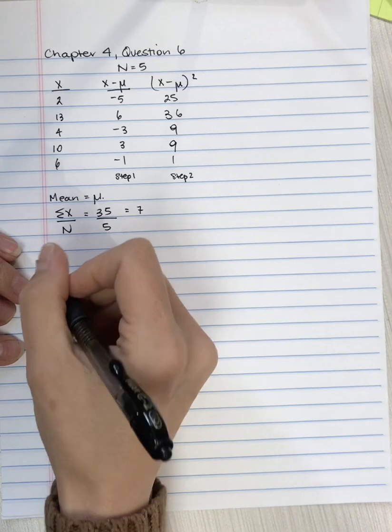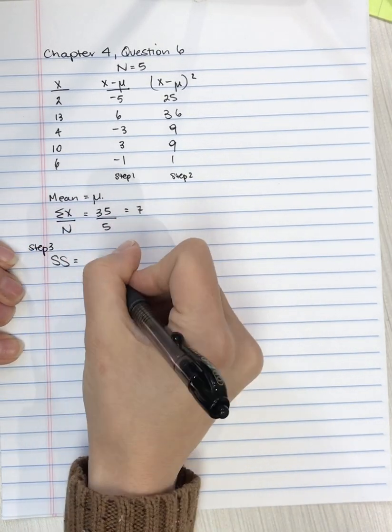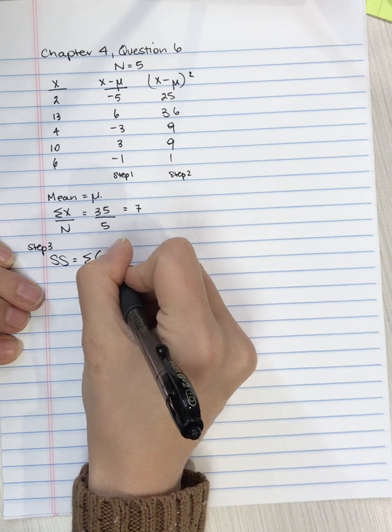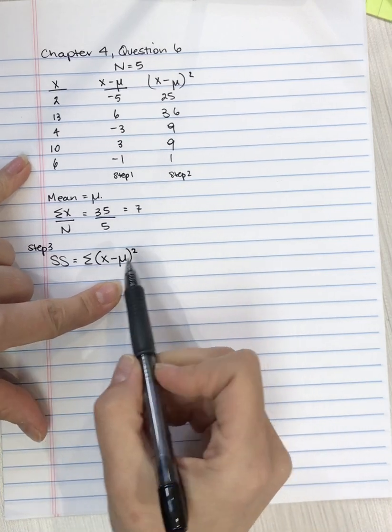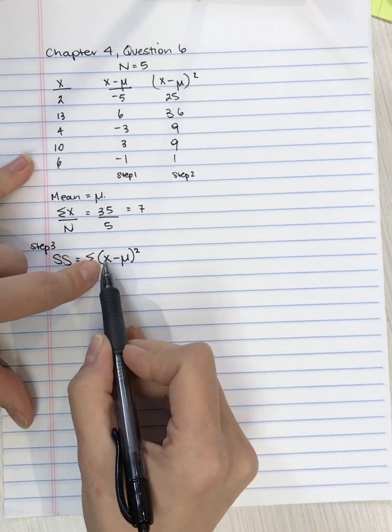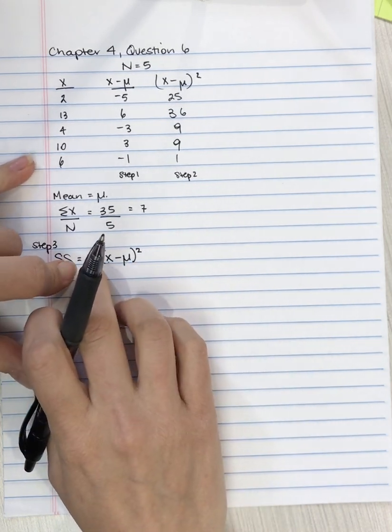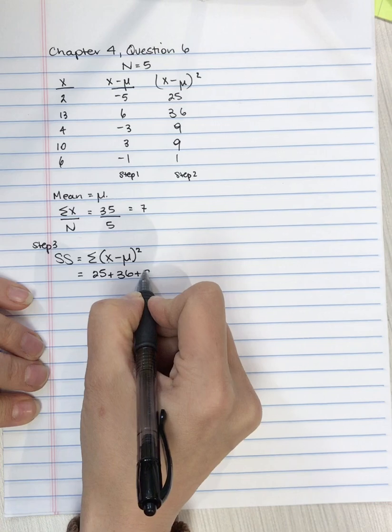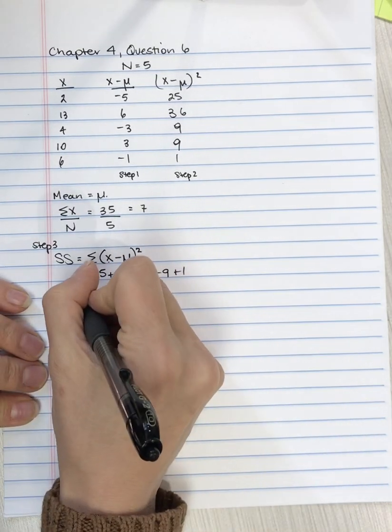Then for the sum of squares, which is step 3, we're going to add up the square of all of these deviation scores. So if we look here, just to review the order of operations, you take each score, you do the brackets, so you take each score, subtract the mean, then you do exponents, you square, and then you do the summation symbol. So we're going to add them all up. So this is 25 plus 36 plus 9 plus 9 plus 1, and that's equal to 80.